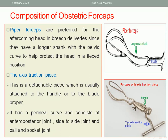What about the axis traction piece? This is a detachable piece fixed to the handle of the forceps — commonly attached to the handle rather than the blade proper. It has a perineal curve and consists of an anteroposterior joint, a side-to-side joint, and a pull-on-socket joint.